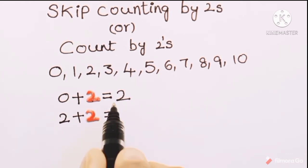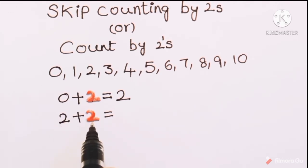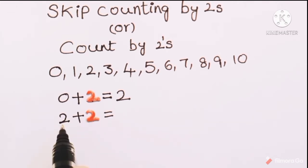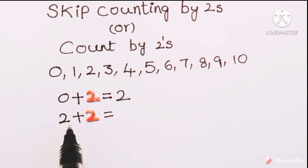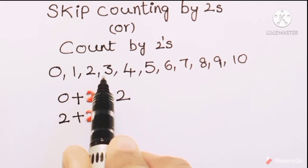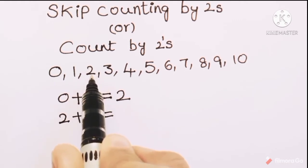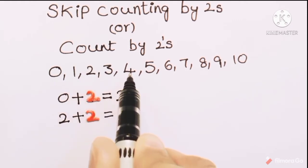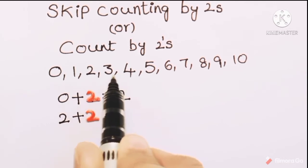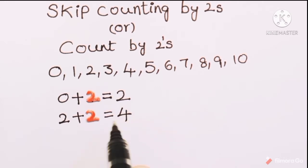Now 2 becomes the previous number. If we again add 2 to the number 2, how much do we get? From the number 2, count 2 numbers forward: 1, 2. So the addition of 2 to the number 2 is 4. 2 plus 2 is 4.